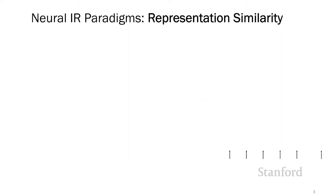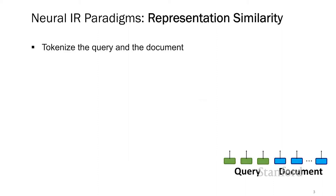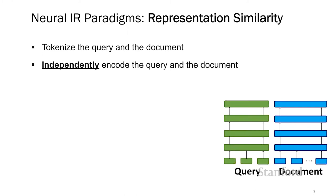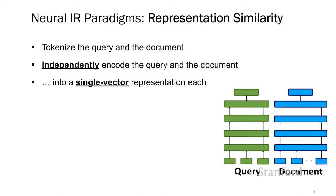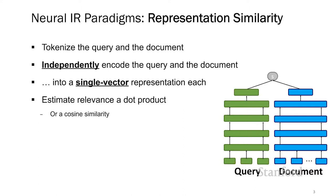The next paradigm is the representation similarity paradigm. In this paradigm, we begin by tokenizing the query and the document, and we feed each of them independently through an encoder like BERT. This encoder produces a single vector representation for the query and for the document separately. For BERT, we could take this through the class token and take the output embeddings, or we could average all the final layer outputs. Once we have those, we calculate the relevance score as a single dot product between the two vectors.